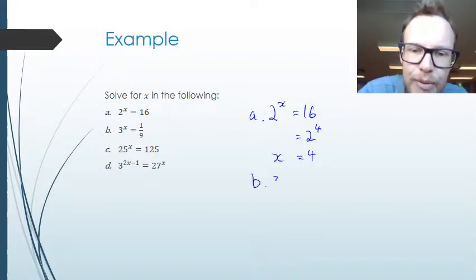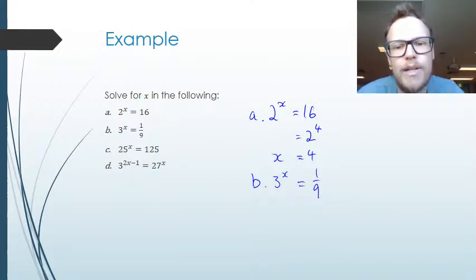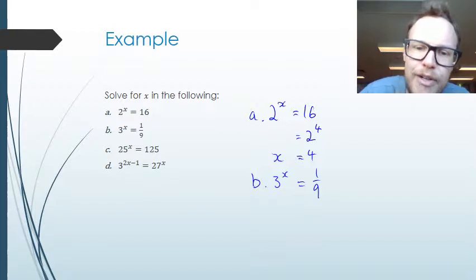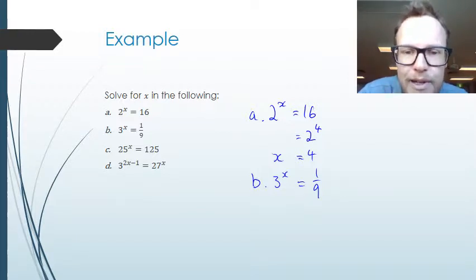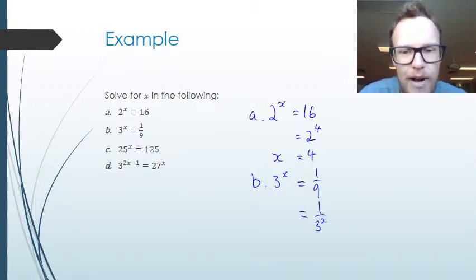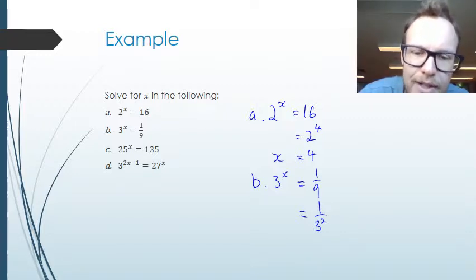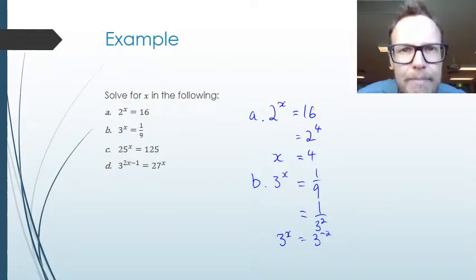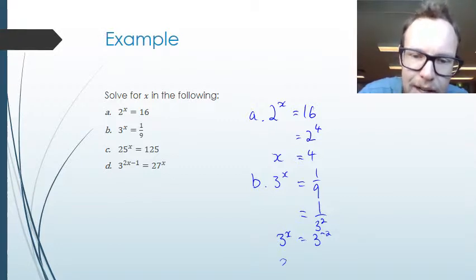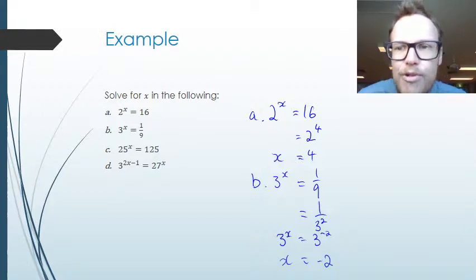For part b, we have 3 to the power of x equals 1 over 9. We need to remember that an inverse value corresponds to a negative power. The 1 over 9 can be expressed as 1 over 3 squared, which is the same as 3 to the power of negative 2, because finding the reciprocal of 3 squared makes it a negative power. So equating the exponents gives x equals negative 2.